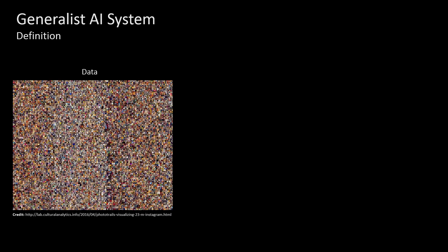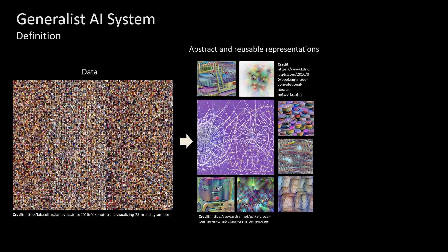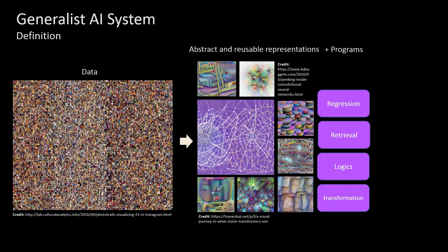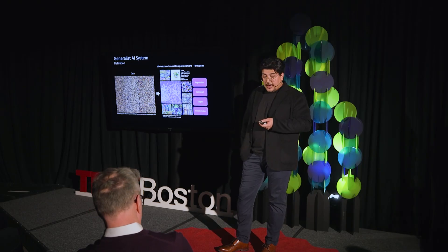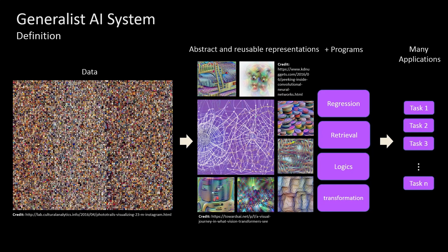What do I mean by generalist AI? A generalist AI consumes a large corpus of data and transforms it into an abstract and reusable representation, plus a couple of programs that are encoded inside the system. The whole generalist AI is basically a combination of a knowledge graph and a couple of programs like regression, retrieval, logics, and transformations — all inside one gigantic neural network. As a result, they can generate many more kinds of tasks as opposed to just one task.